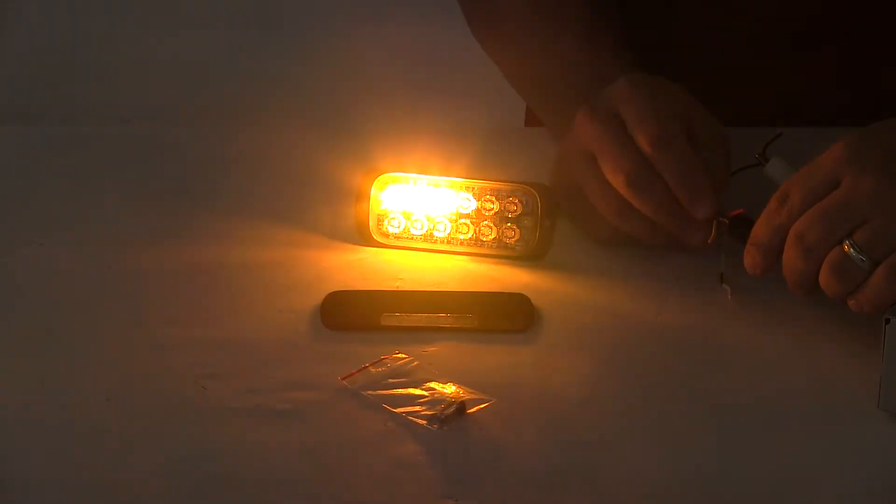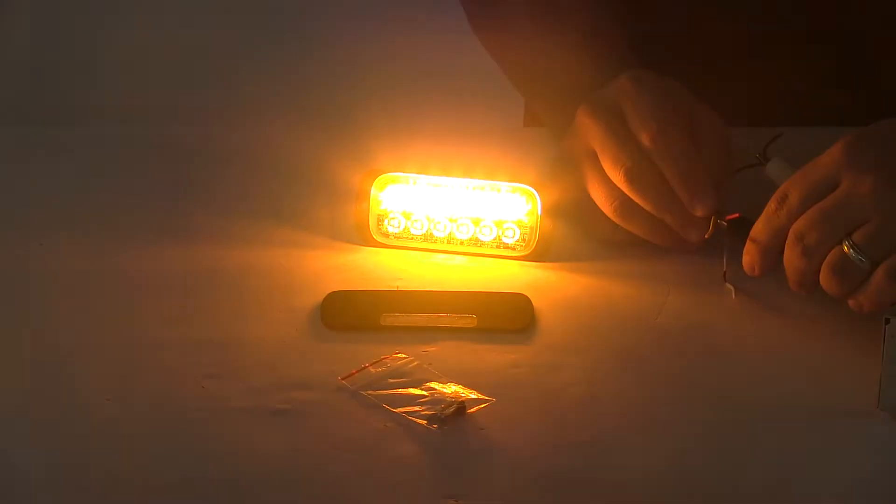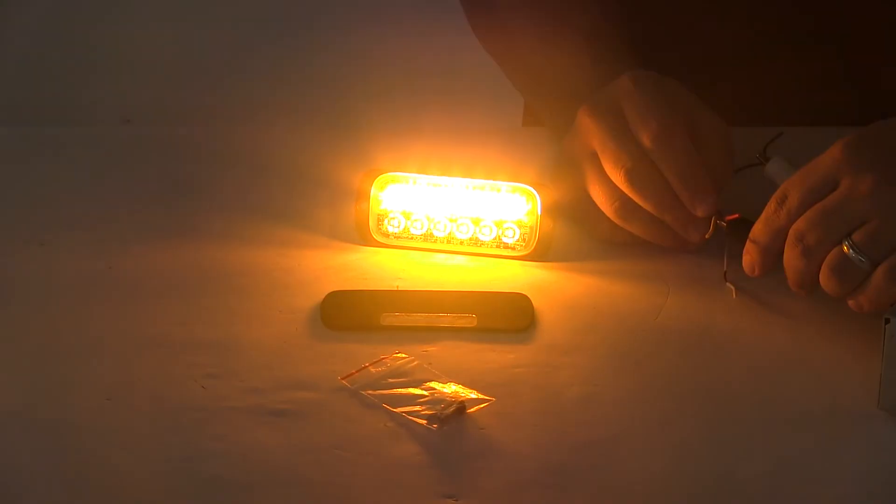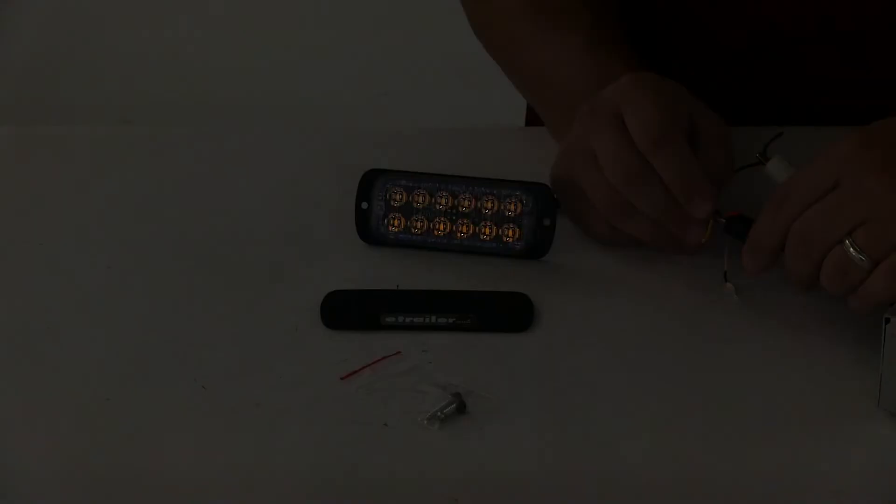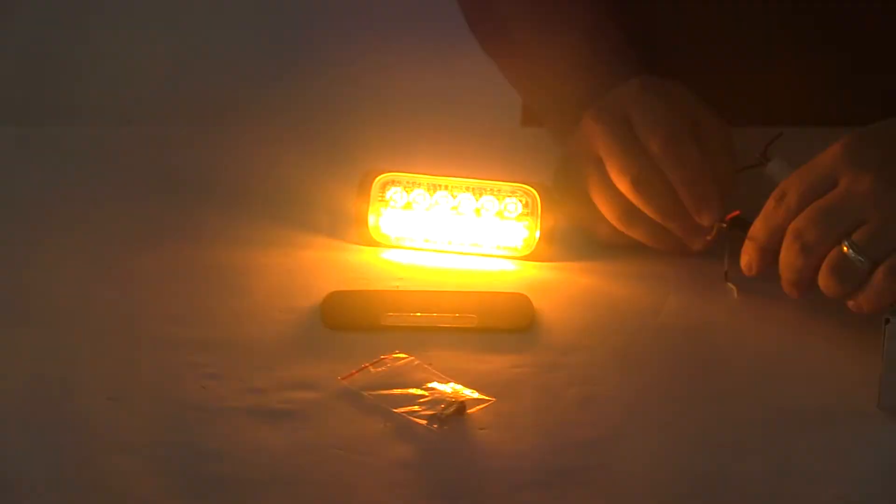So I'm going to cycle through these and we'll go all the way through until we get back to that solid pattern. So about every three seconds or so, I'm simply just touching the yellow wire to my 12 volt positive power wire. And every time I do, it allows me to change the flash pattern of this light.